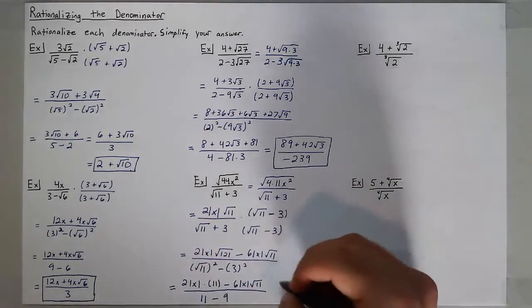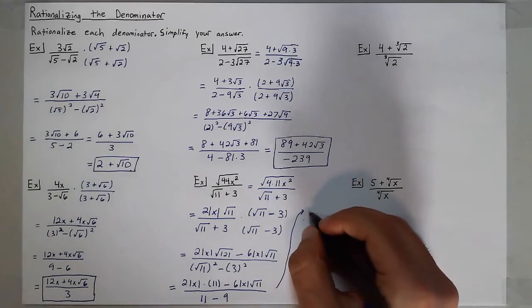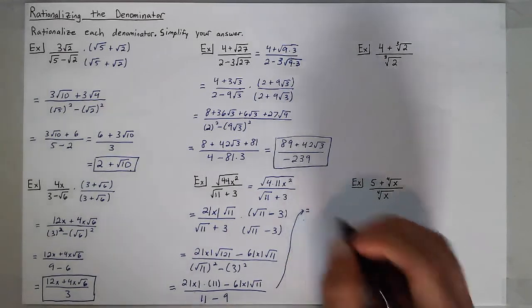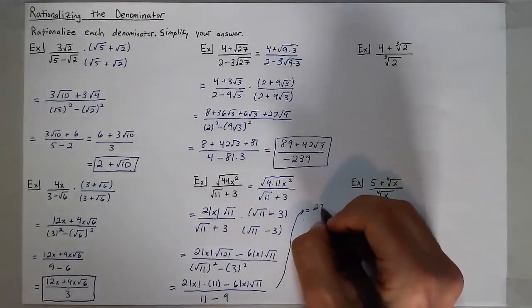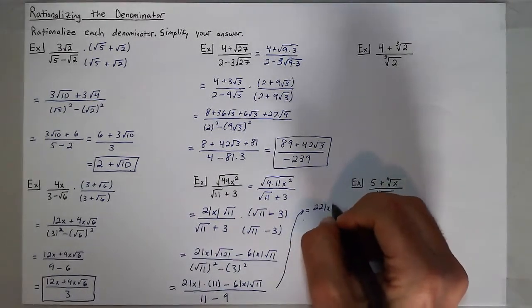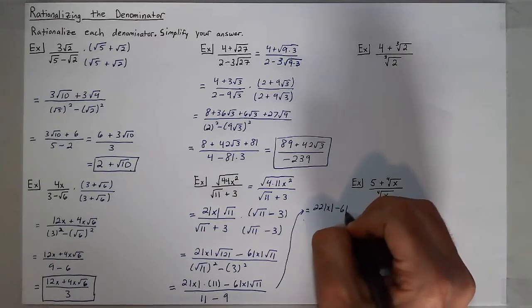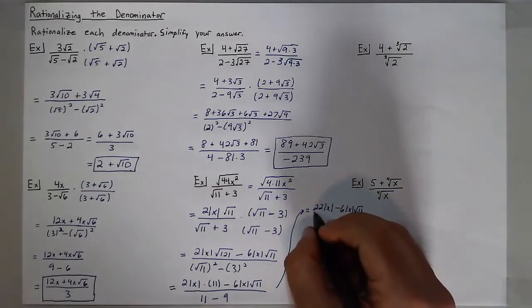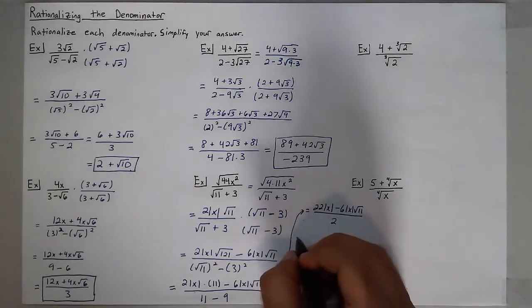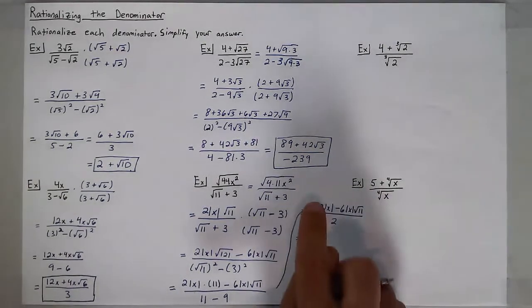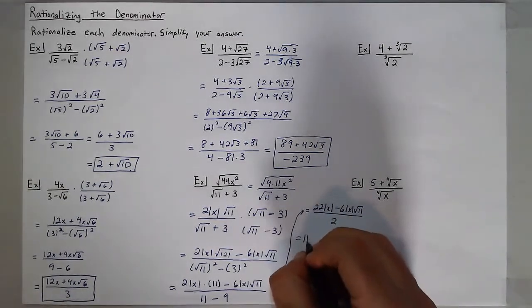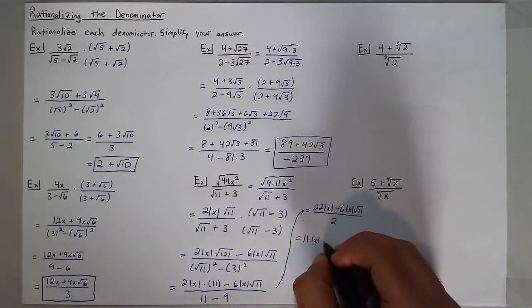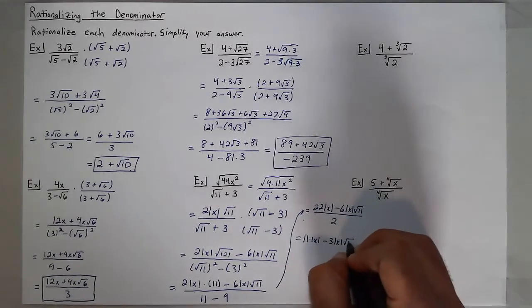This can be simplified even further. Up top I have 22 times the absolute value of x minus 6 times the absolute value of x times the square root of 11, all over 2. So 22 divided by 2 is 11 times the absolute value of x, minus 3 times the absolute value of x times the square root of 11.